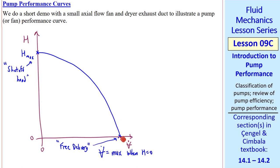At either of these extremes, the efficiency is zero because, as I pointed out, eta has both H and V dot in the numerator, so if either of these is zero, our efficiency is zero, and the efficiency curve typically looks like that.